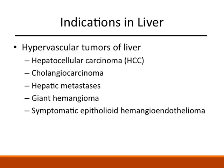Now, when would we use this technique in liver tumors? We are going to treat hypervascular tumors of the liver. These include hepatocellular carcinoma, cholangiocarcinoma, hepatic metastasis, giant hemangiomas, and hepatic epithelioid hemangioendotheliomas.